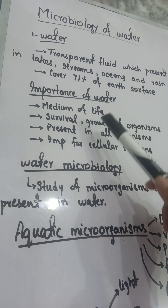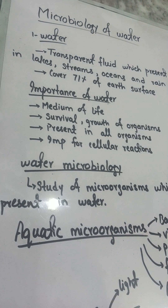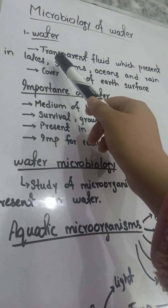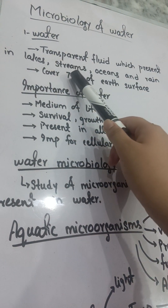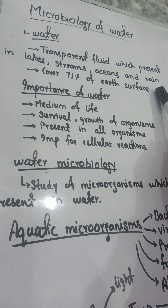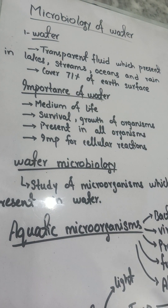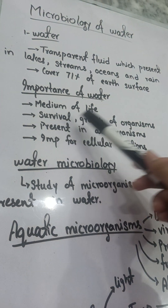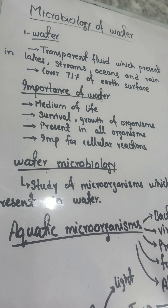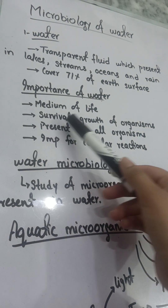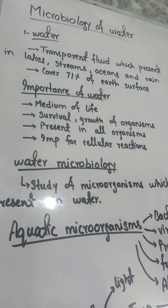First of all we are going to define water and discuss its importance. Water is a transparent fluid which is present in lakes, streams, oceans, and rain. It covers about 71 percent of the Earth's surface. Water is the most abundant fluid on Earth's surface and it has great importance because it is the medium of life — we cannot survive without it.